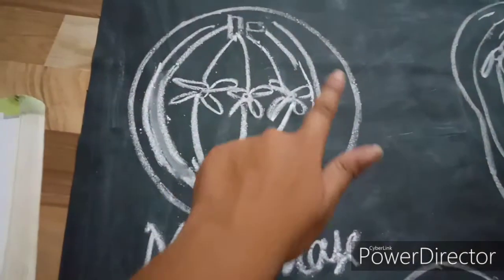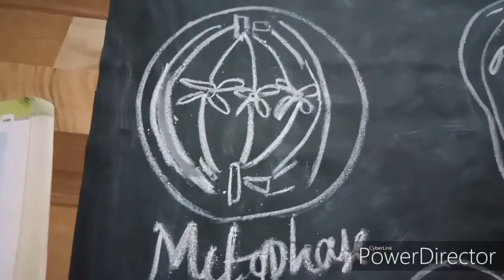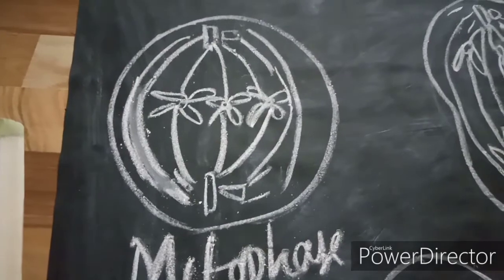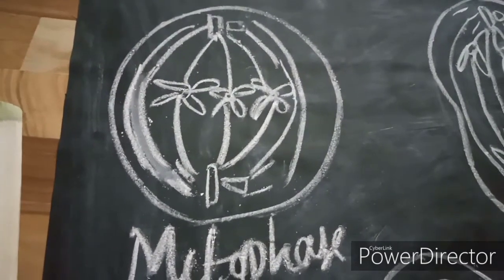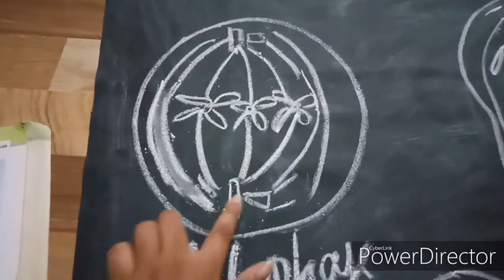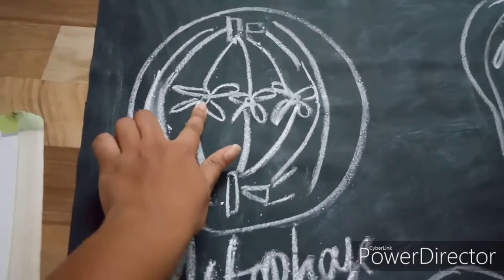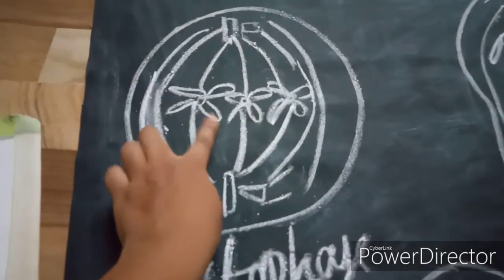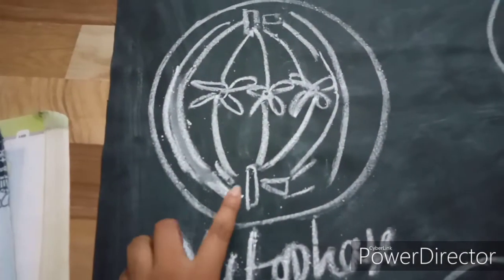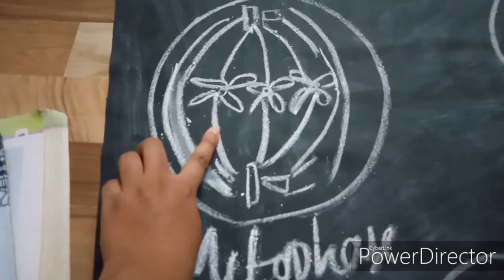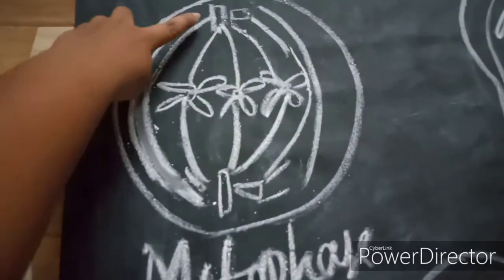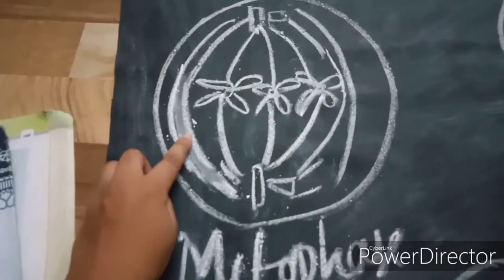The next phase is metaphase. Metaphase is identified by the fully formed spindle apparatus. The chromosomes, which have become short and thick with distinct chromatids, move towards the equatorial plane and get attached to the spindle fibers at the centromere, while the arms of the chromosomes are swinging. The spindle fibers attached to the centromere are known as chromosomal spindle fibers or discontinuous spindle fibers.